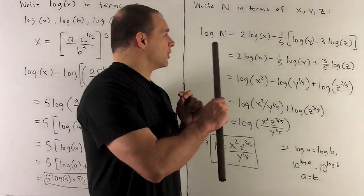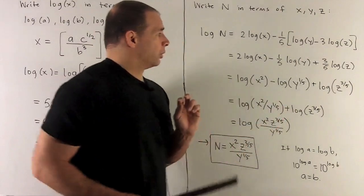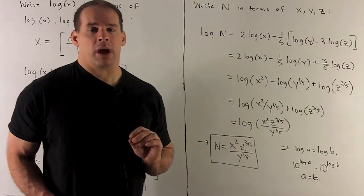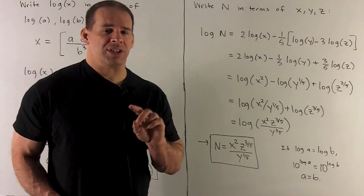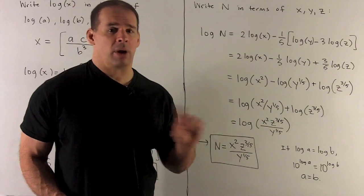Now here, my first step is going to be to distribute through the minus 1 fifth. I'm going to want all the constants out in front of our logarithm, no parentheses, and then we'll take those constants and put them up on the exponents on the inside.